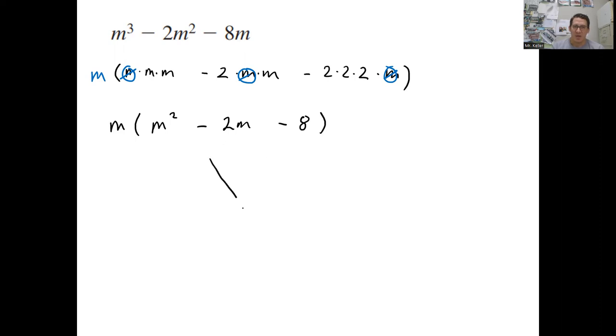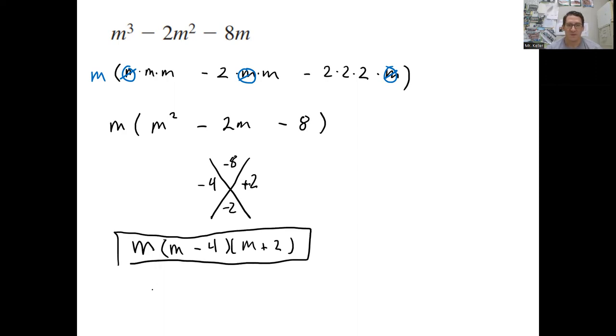So again, I'm going to do an x factor on what's left. Negative 8 on top, negative 2 on bottom. Factors of negative 8 that add to negative 2. That is going to be negative 4, positive 2. Negative 4 times 2 is negative 8, negative 4 plus 2 is negative 2. So that is ready for our parentheses. So that's going to be m minus 4 from that one. This one is m plus 2. And then don't forget to bring down the extra m from the outside for our first layer of factoring.